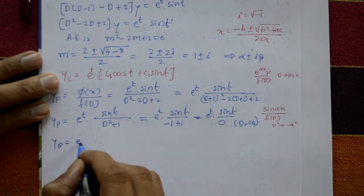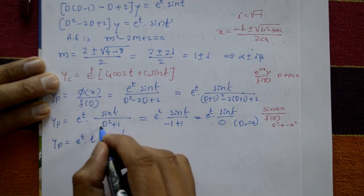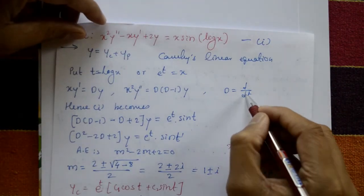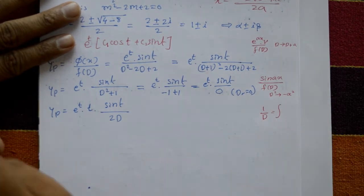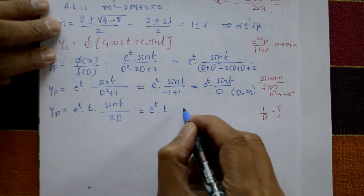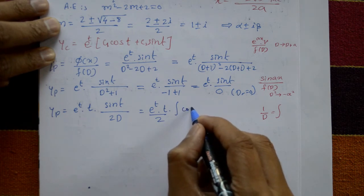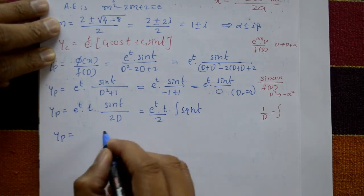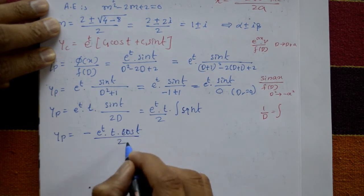Here 1/D is the inverse differential operator, meaning integration. Integrating sin t gives −cos t. Therefore yp = e^t · t · (−cos t) / 2 = −(e^t · t · cos t) / 2. This is the particular integral.